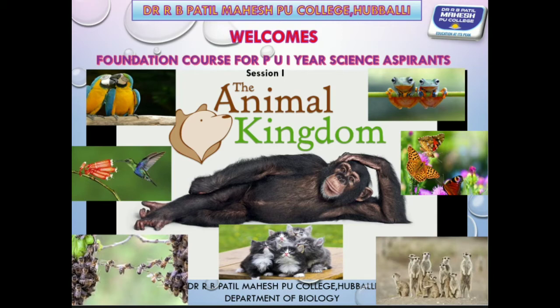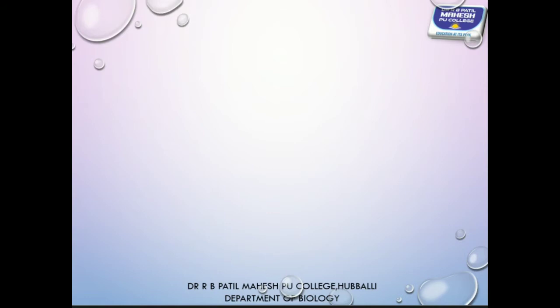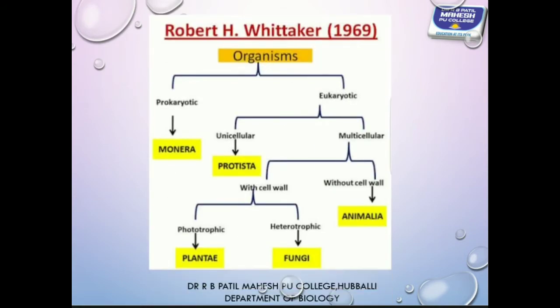Living organisms are broadly classified into five kingdoms: Kingdom Monera, Kingdom Protista, Kingdom Plantae, Kingdom Fungi, and Kingdom Animalia. The five-kingdom classification was proposed by Robert H. Whittaker in the year 1969.